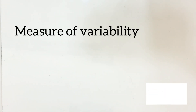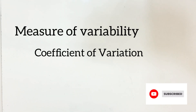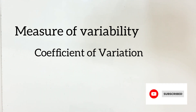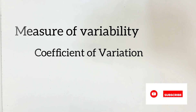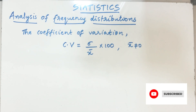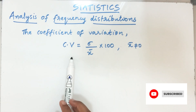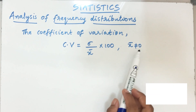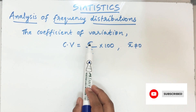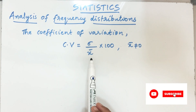So we need another measure of variability that is independent of unit. Today we will see the coefficient of variation, a measure of variability which is independent of units. In the analysis of frequency distributions, we define the coefficient of variation, denoted by CV, as σ divided by x̄, multiplied by 100, where x̄ is not equal to zero. Here σ is the standard deviation and x̄ is the mean.